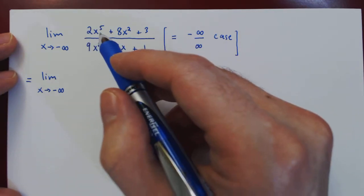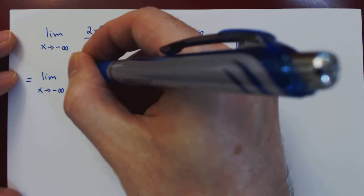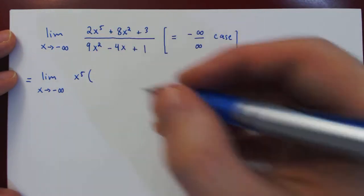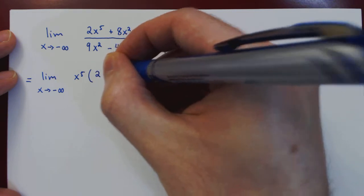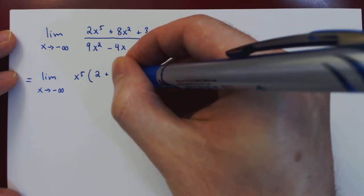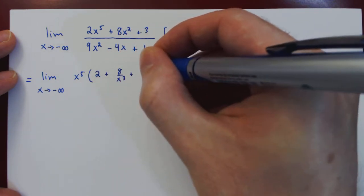On the numerator that is x^5, and so we factor x^5. What's left is 2, plus 8 over x cubed, plus 3 over x^5.